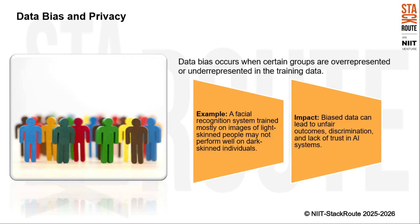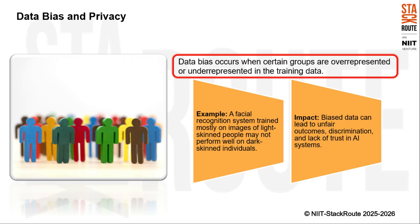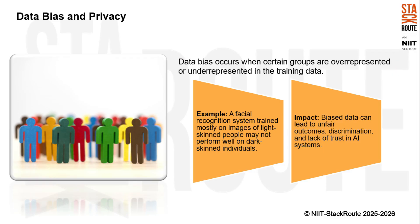Let's discuss an important concept in AI called data bias. Data bias occurs when certain groups are overrepresented or underrepresented in the training data, meaning the data used to train an AI system does not accurately reflect the diversity of the population it's meant to serve. Consider a facial recognition system trained mostly on images of light-skinned people — it may not perform well when recognizing individuals with dark skin.